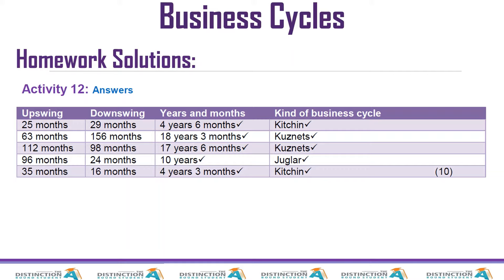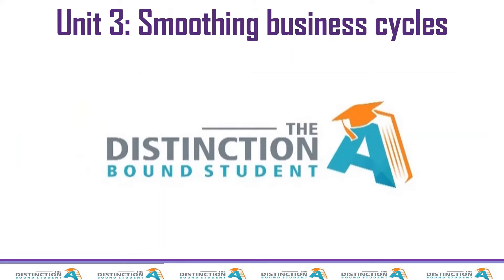The next one will be Kuznets because that is 18 years. The next one is still Kuznets, and the next one is a Juglar, and the last one is a Kitchen. So it was a simple activity like that.